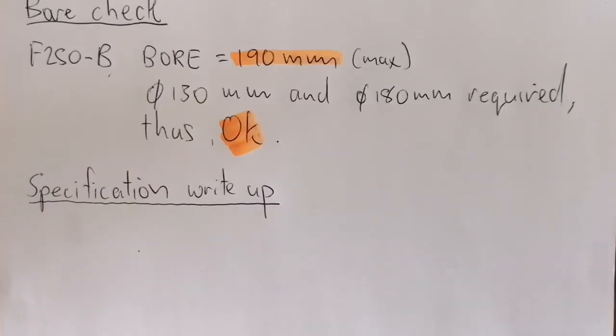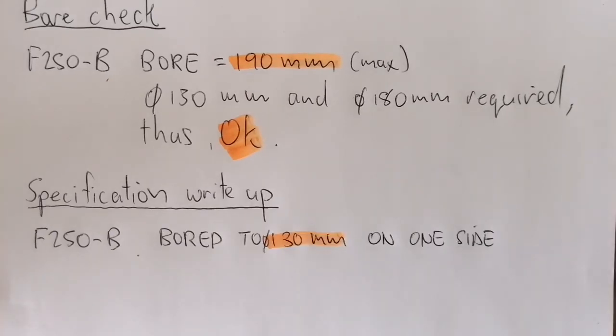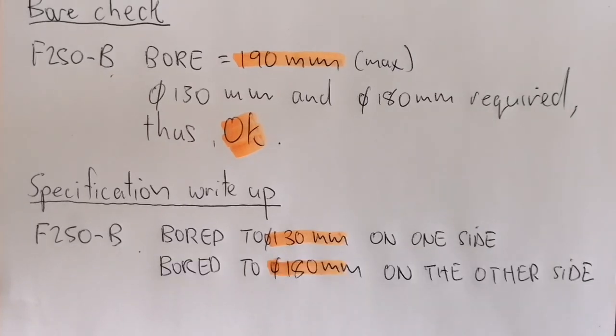Specification write-up - in this section we will write out a specification to order from. This specification will help you to order the correct part numbers from the manufacturer. When you order the coupling, you will need an F250-B bored to 130 millimeters on one side and bored to 180 millimeters on the other side. That's the end of our specification.